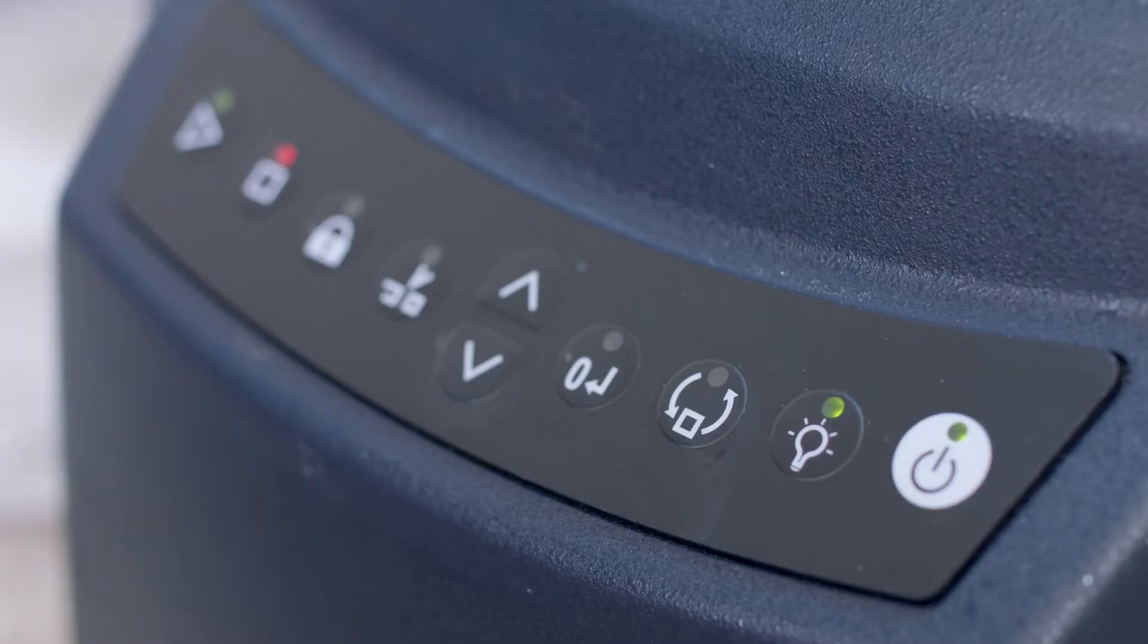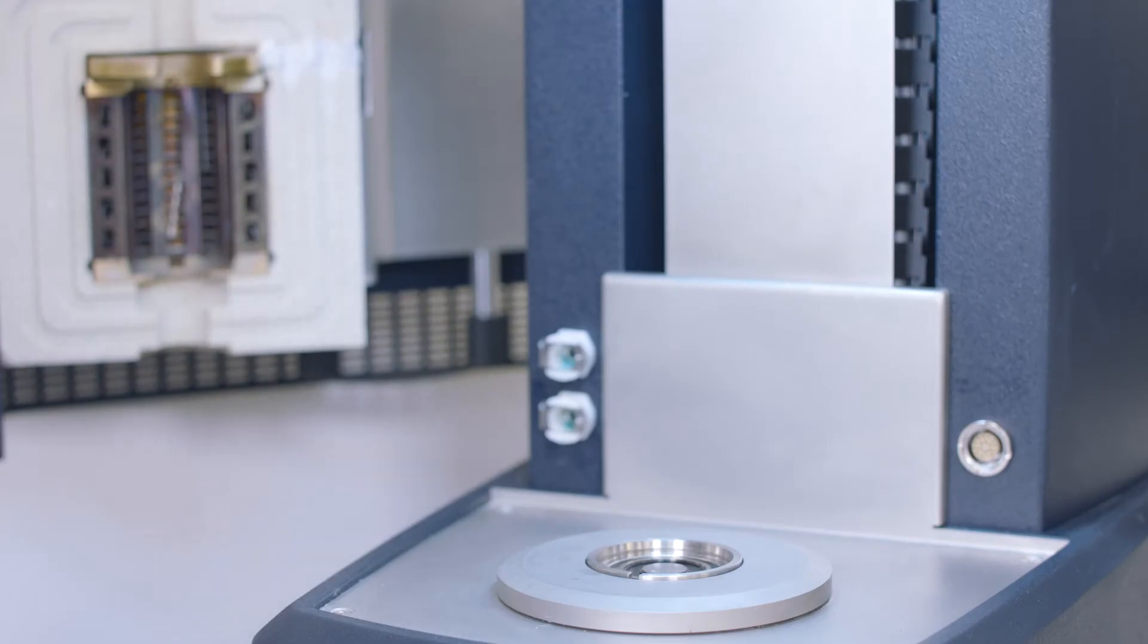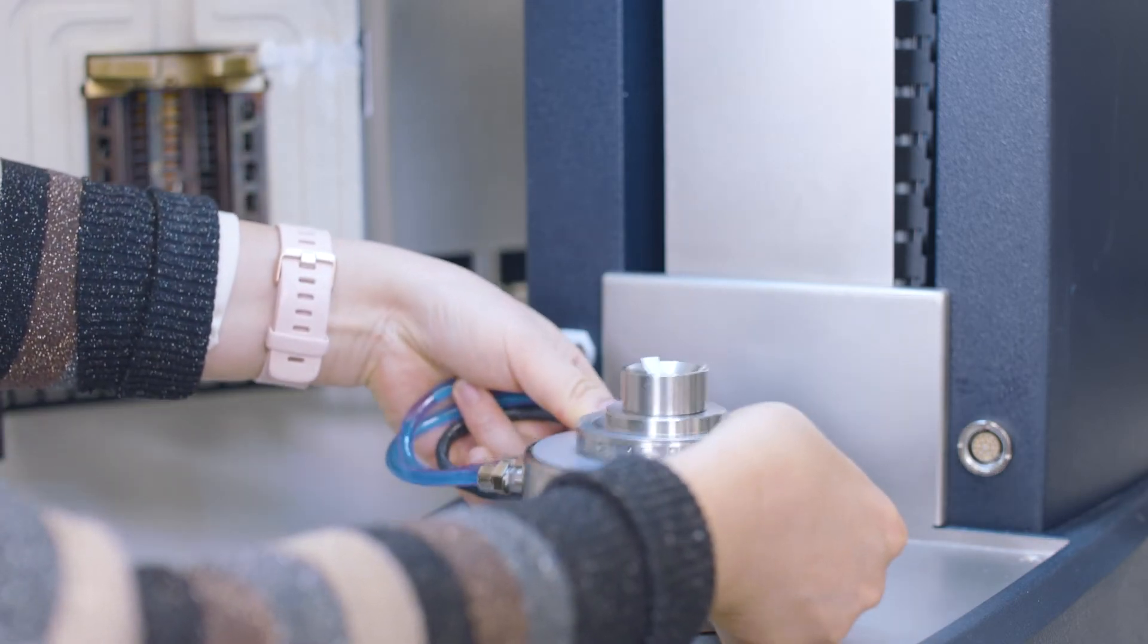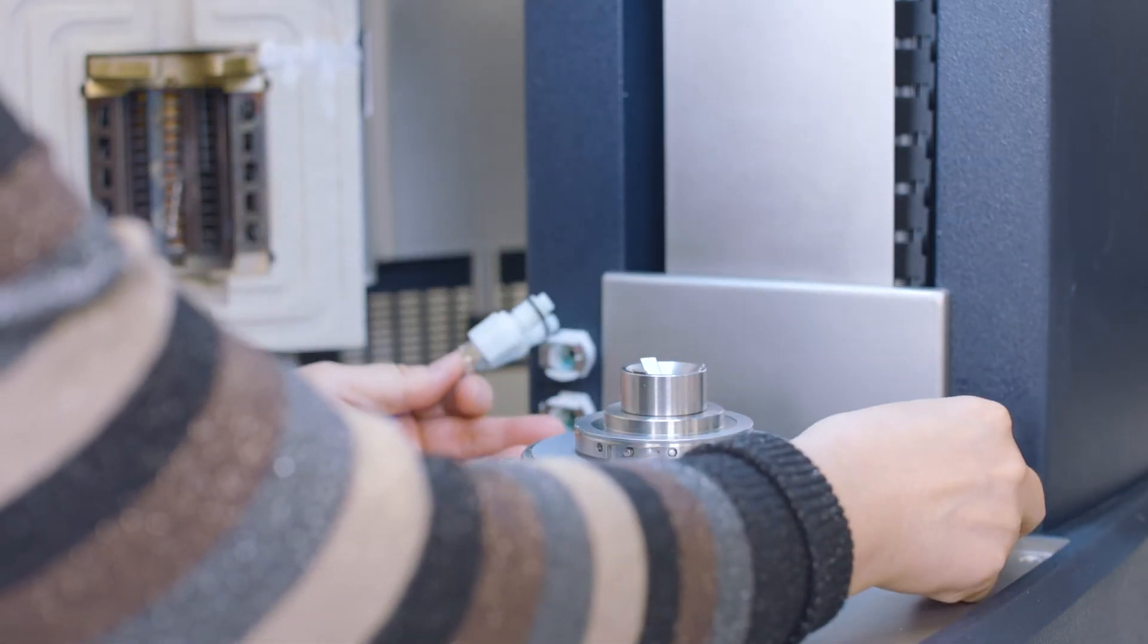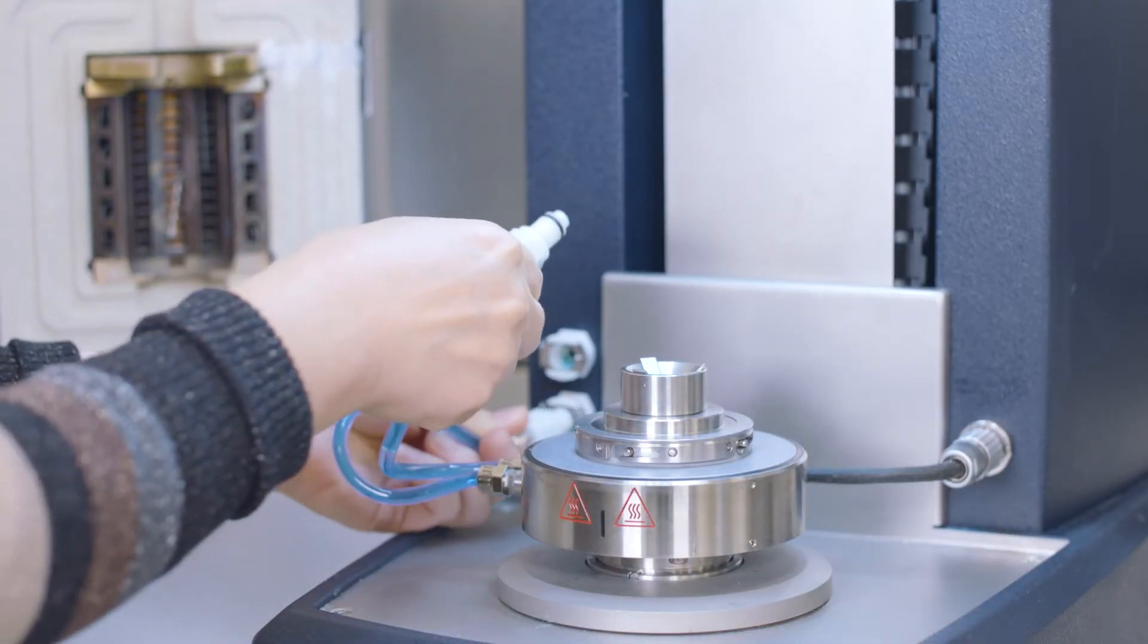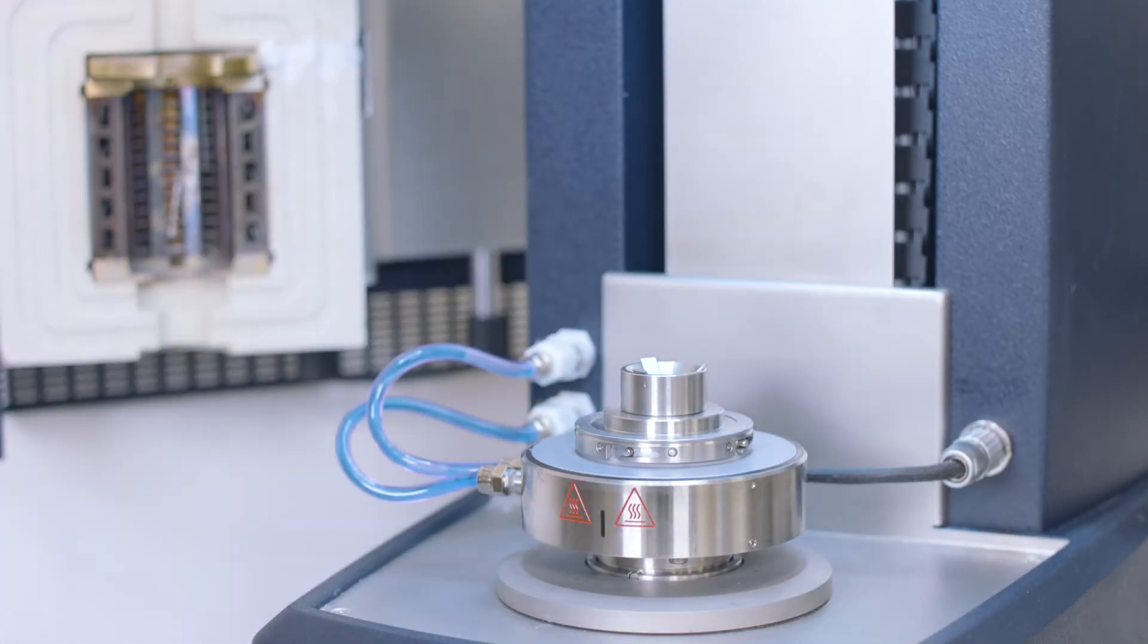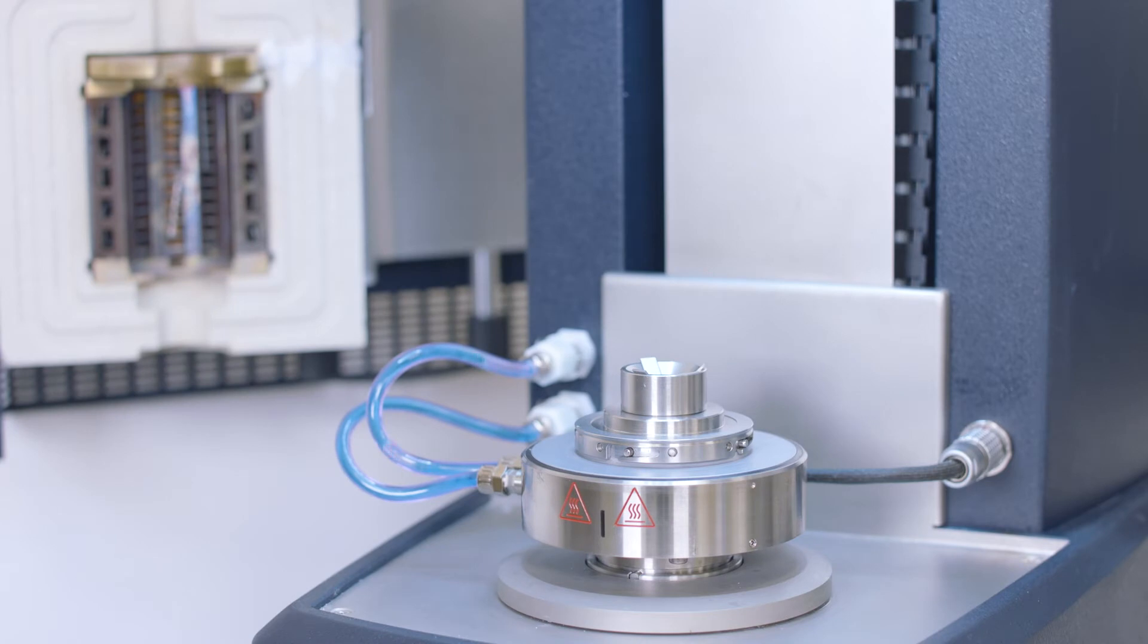From the instrument control panel, press this button to temporarily release the magnet. Put the Peltier onto the instrument bottom stage. Then, insert the Smart Swap plug with the red dot facing up. Plug in the circulating tubes and turn on the circulator.